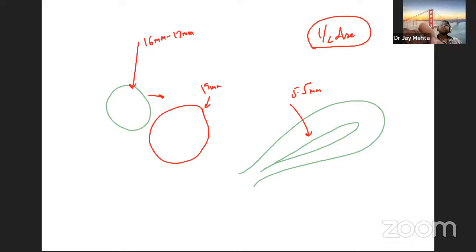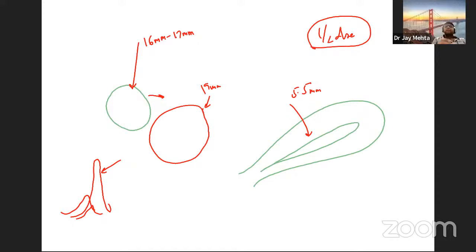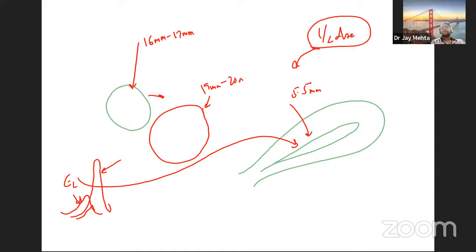Remember: there is a small estrogen peak before the LH peak, and a minor progesterone peak slightly before LH actually peaks. When this estrogen is peaking, it has a good effect on the endometrium. At this stage, providing a half dose means the follicle goes from 19 to about 20 millimeters, but it will not undergo luteinization — corpus luteal changes will not occur.